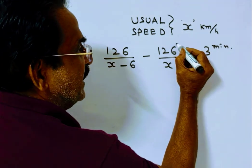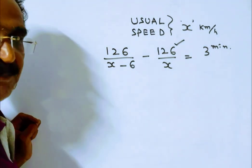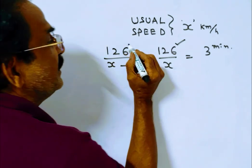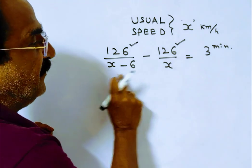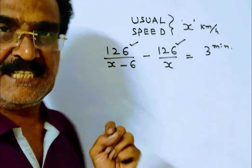This is the normal time, the usual time. This is the time with reduced speed. The difference between these two is 3 minutes.